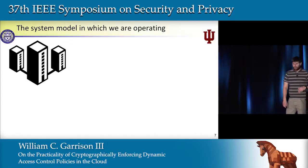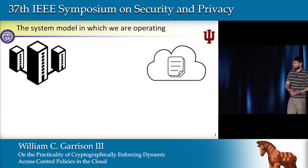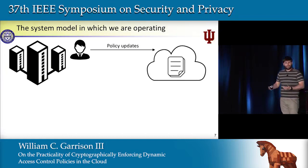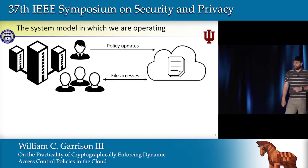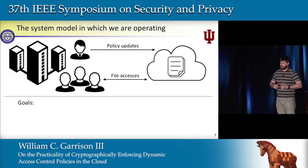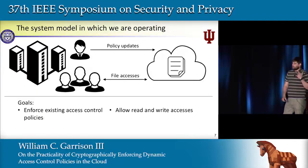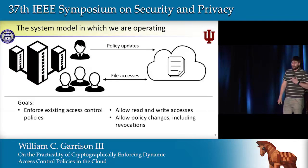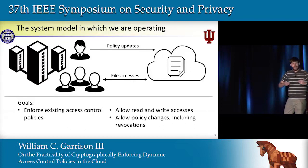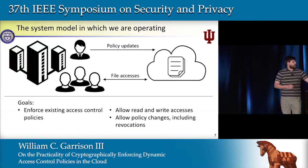The system model includes an organization that wants to outsource its files to the cloud, with administrators who update policy over time and regular users who access files. Our goals are straightforward: enforce common access control policies, allow both read and write accesses, and support policy changes — including, importantly, revocations, the ability to take access away from users when necessary.